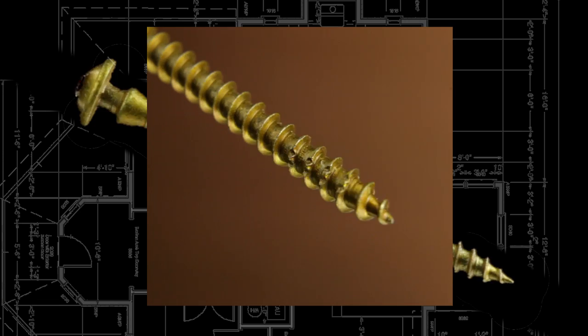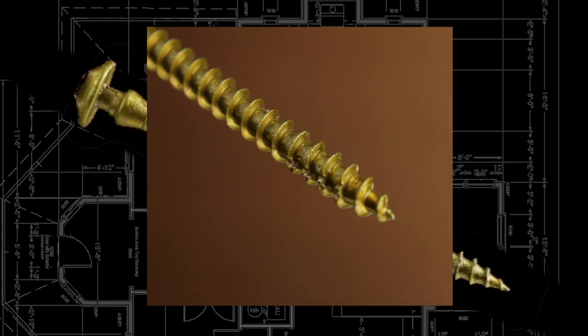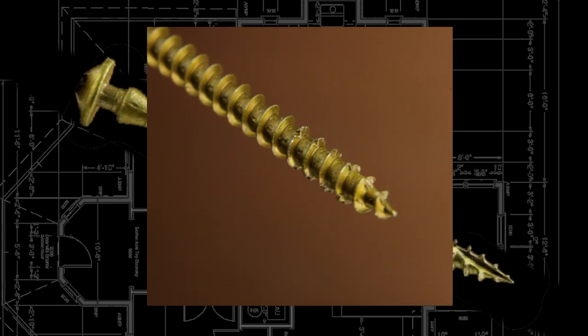The W cut on the first few threads acts like a saw blade, reducing torque and making the drive easier.